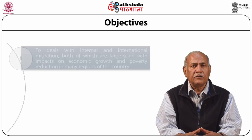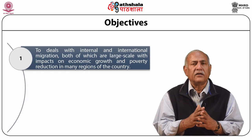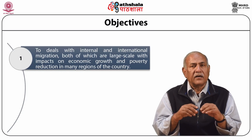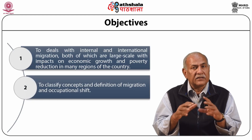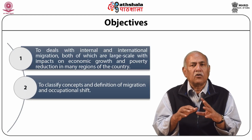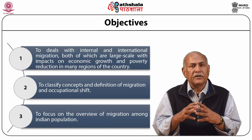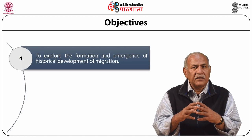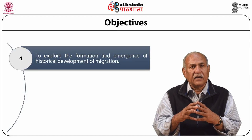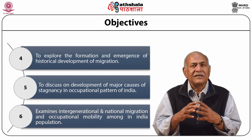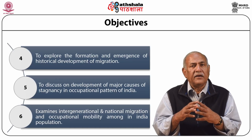The objectives are: first, to deal with internal and international migration, both of which are large scale with impacts on economic growth and poverty reduction in many regions of the country; to classify concepts and definitions of migration and occupational shift; to focus on the overview of migration among the Indian population; to explore the historical development of migration; and to discuss the major causes of stagnancy in the occupational pattern of India, including intergenerational and national migration and occupation mobility among the Indian population.